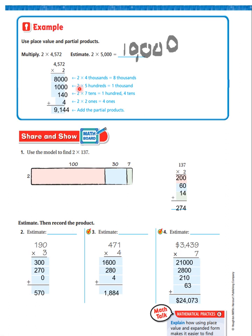So, now it says 2 times 4,000 is 8,000. 2 times 500 is 1,000. 2 times 70 is 140. 2 times 2 is 4. When I add all of that up, I get 9,144. All right. So, let's look at the share and show.